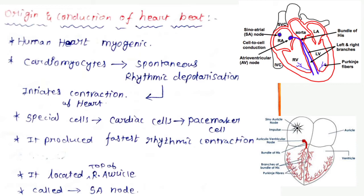The human heart has special cells, which are also cardiomyocytes. Depolarization involves the exchange of electrical signals, which leads to contraction and relaxation. These special cardiac cells produce fast rhythmic contraction. Look at the special cell for cardiac function — it is otherwise called the pacemaker, which produces fast rhythmic contraction.